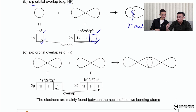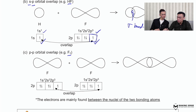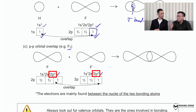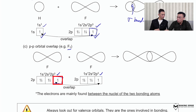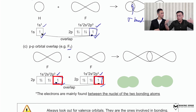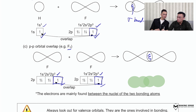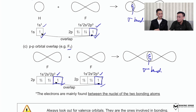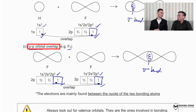For the F₂ molecule, once again the electronic configuration is written down and we focus on the outermost orbital. In the electron-in-box diagram, one p orbital has an unpaired electron, and the other p orbital also has an unpaired electron. They both overlap via a head-on car crash. This sigma bond is formed by a p orbital and another p orbital: a p-p orbital overlap.